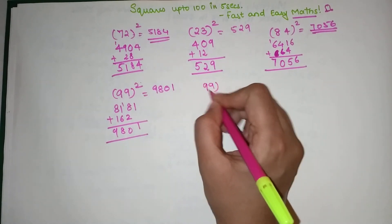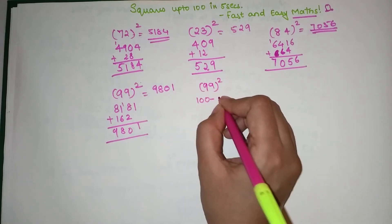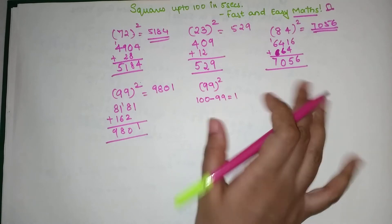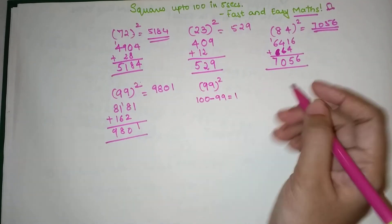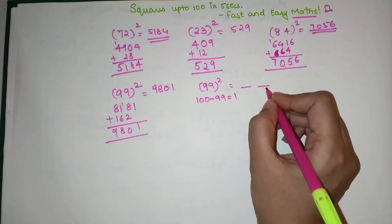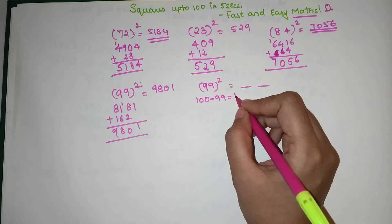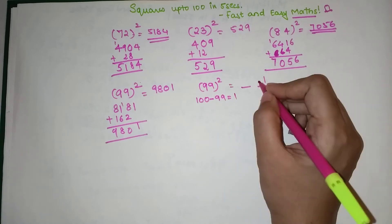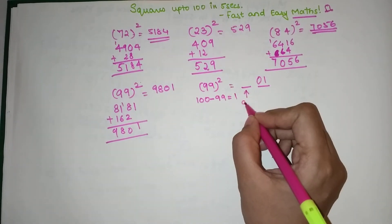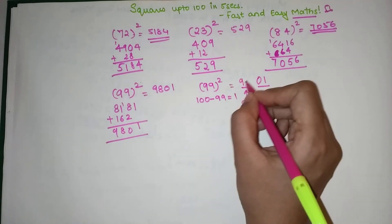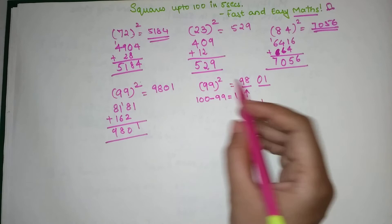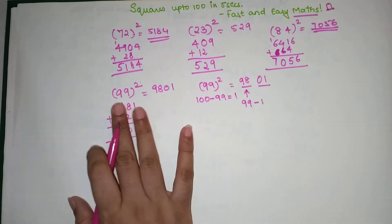Let's find 99² using the second trick. This trick is for numbers closer to 100. 100 − 99 = 1. You divide your answer into two parts: the last two digits are the square of the difference — 1² = 1, written as 01 in two-digit form. The first part is 99 − 1 = 98. So the answer is 9801. You see how quickly we got there!